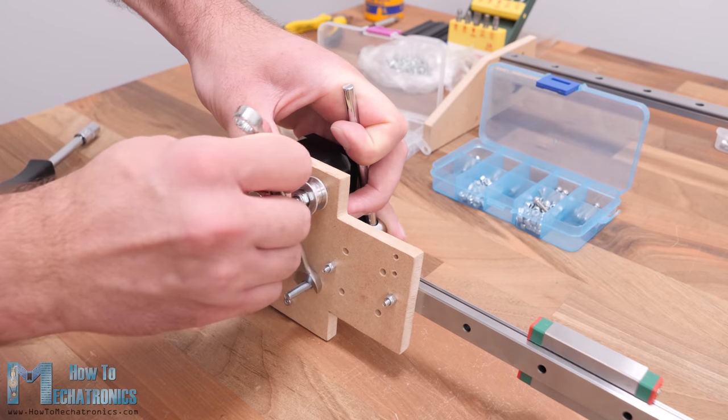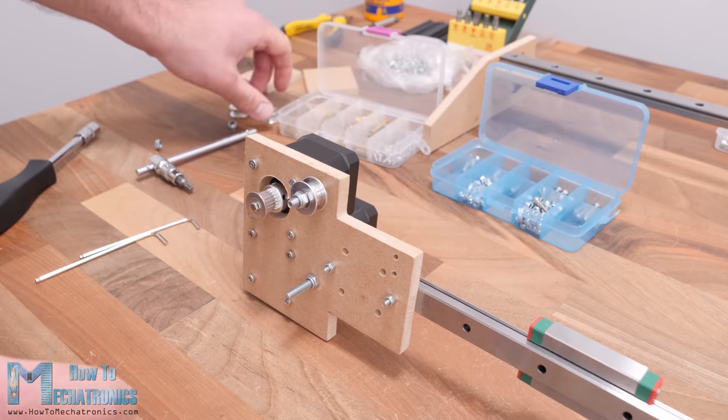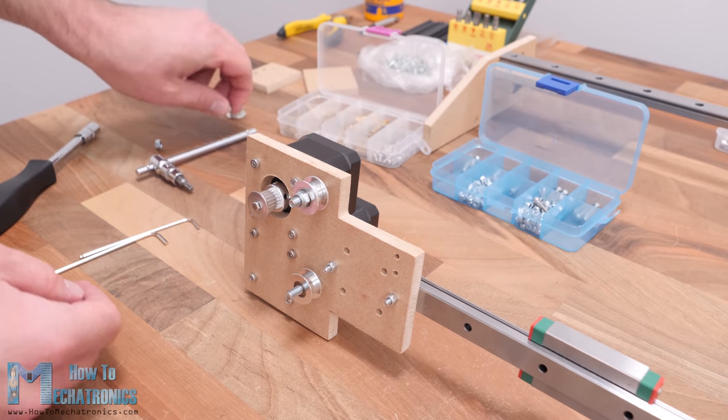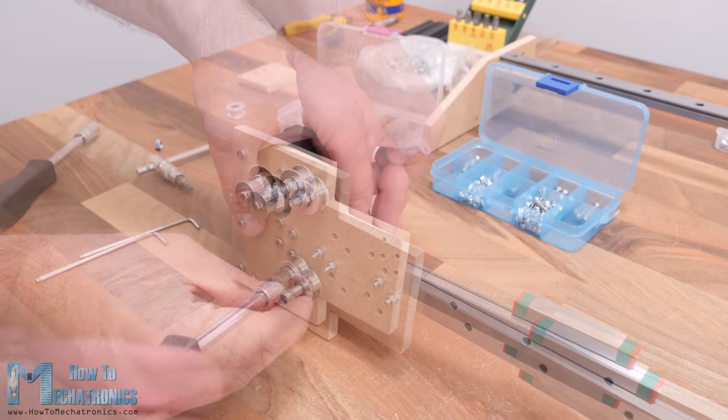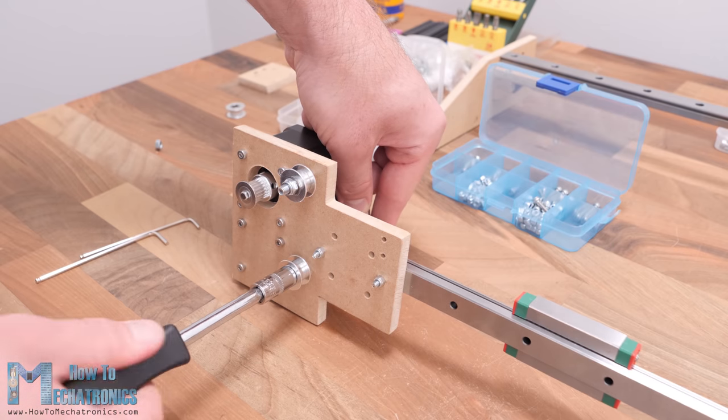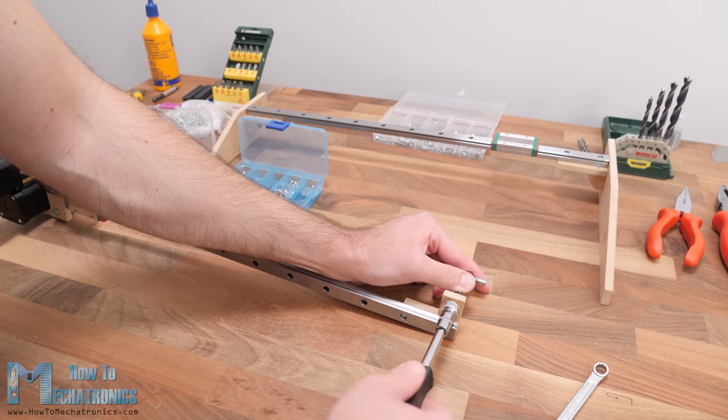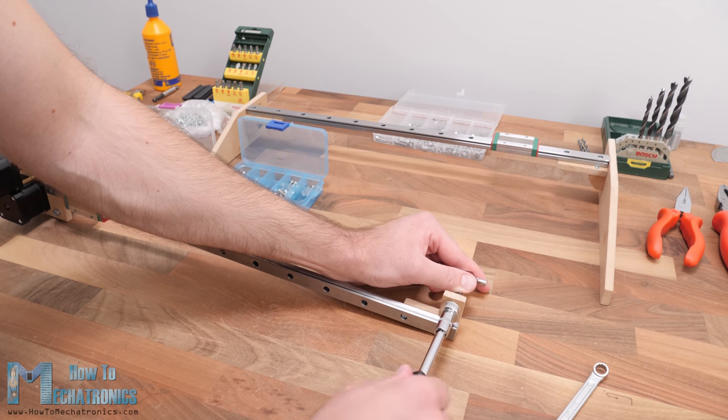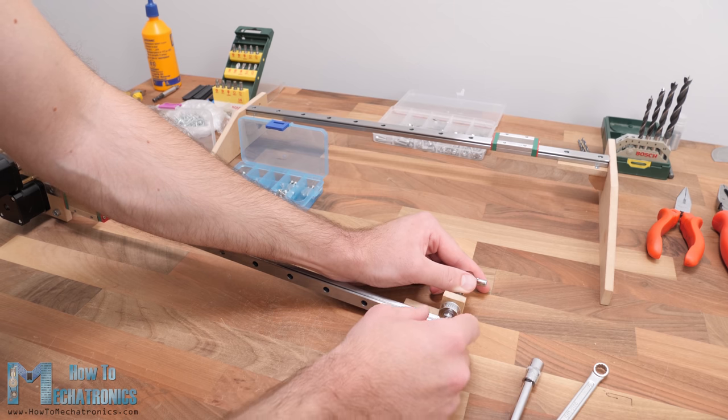For driving the X axis, we need to install two GT2 idler pulleys near the stepper shaft, so that we can create proper tension between the belt and the stepper pulley. We need M5 bolts and nuts for securing them. As for the Y axis, we only need one idler pulley on the other side of the rail, as the belt for this axis will be installed in a loop.